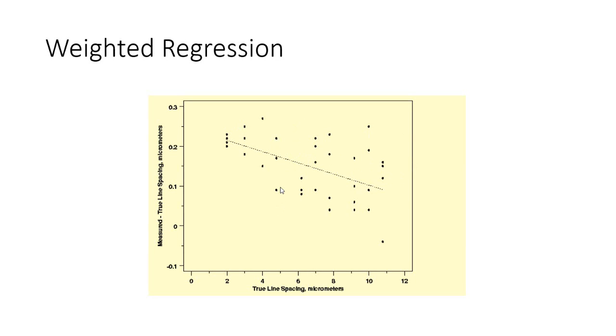As we know, in a linear regression the assumption is that each one of the data contributes equally to the estimates, whereas this assumption gets violated because some of the data are very close to the regression line and some of the data points are farther away from the regression line.